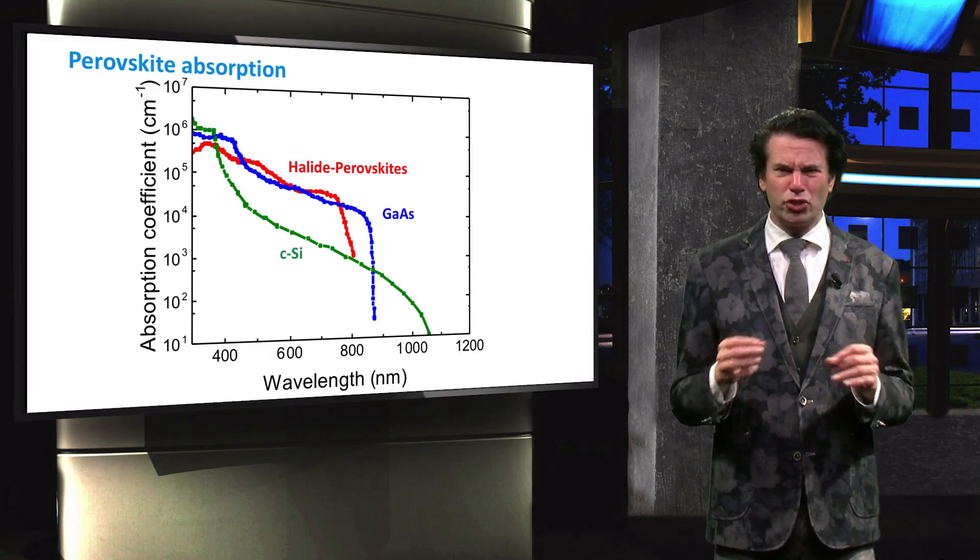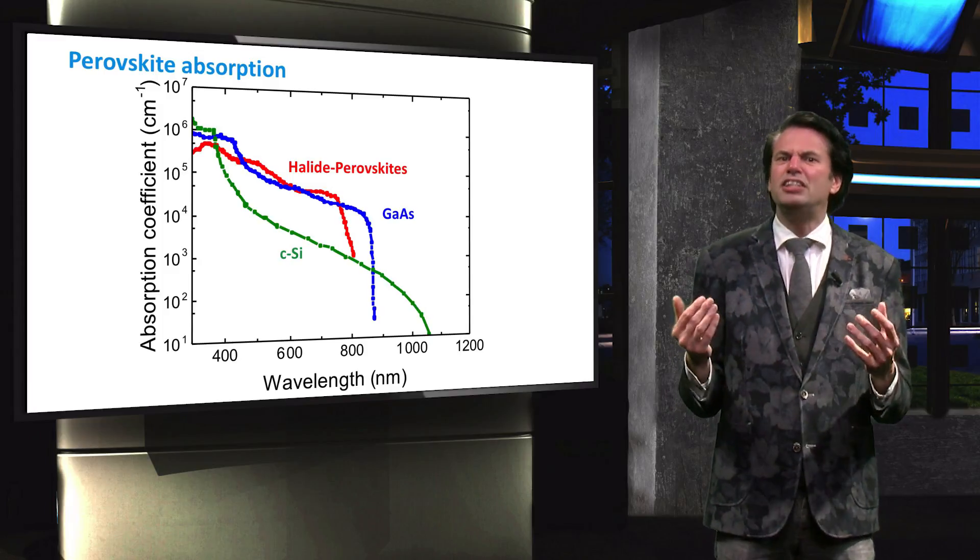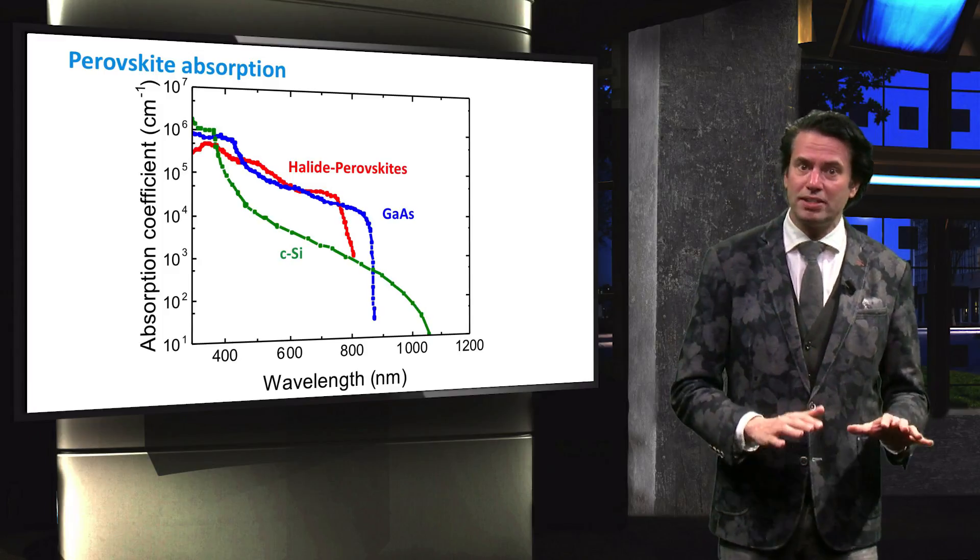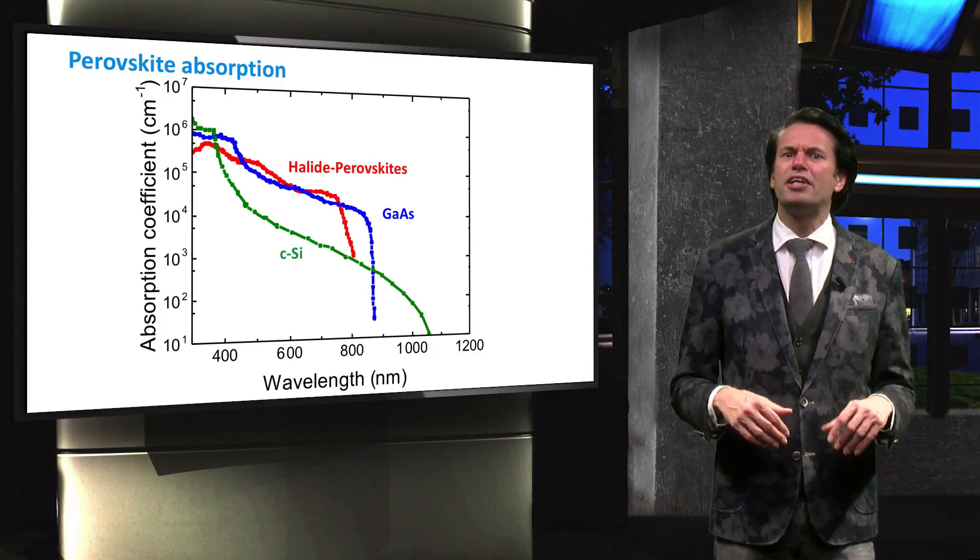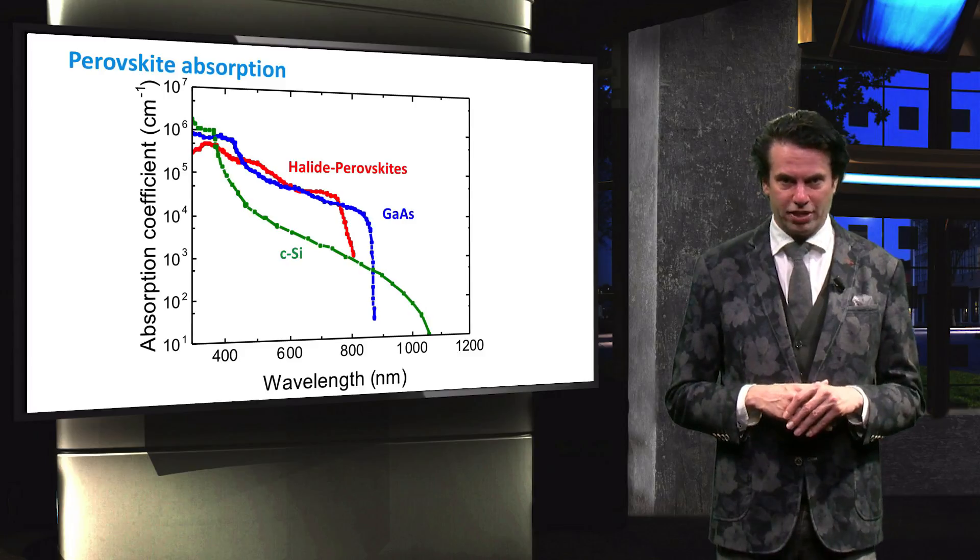The perovskite material does not have a field-dependent exciton dissociation. Also, due to its defect tolerance, the low trap densities in the bulk result in a long intrinsic diffusion length and relatively long carrier recombination lifetimes.